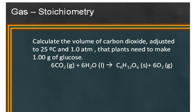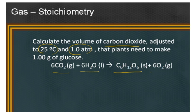Let's practice a gas stoichiometry problem. Calculate the volume of carbon dioxide adjusted to 25 degrees Celsius and 1 atmosphere that plants need to make 1 gram of glucose. Here is the balanced chemical equation. 6 moles of carbon dioxide will react with 6 moles of water to produce 1 mole of glucose and 6 moles of oxygen. This is the classic photosynthesis reaction.